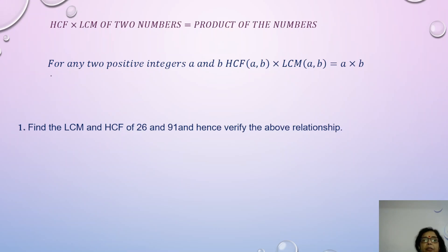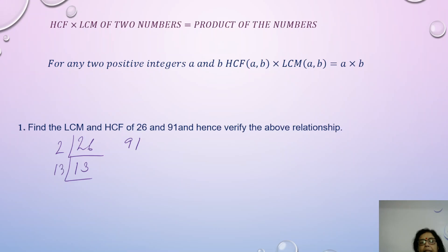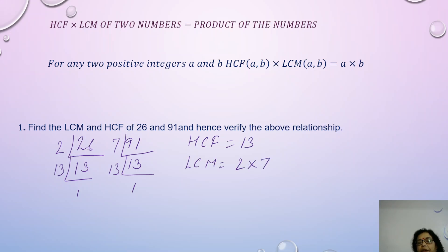Now we move on to the third concept of real numbers: HCF × LCM of 2 numbers equals the product of the numbers. You take any 2 positive numbers, multiply them, and multiply the HCF and LCM — you will always get that the product of HCF and LCM equals the product of the 2 numbers. Here I've taken 26 and 91. The prime factors of 26 are 2 and 13. The prime factors of 91 are 7 × 13. So the HCF is 13, and the LCM is 2 × 7 × 13.